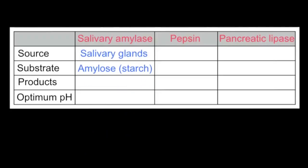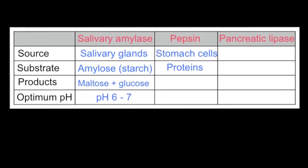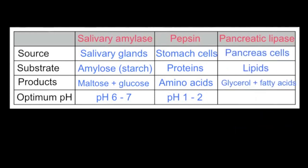To summarise, this table shows you the source, substrate, products, and optimum pH of the enzymes salivary amylase, pepsin, and pancreatic lipase.